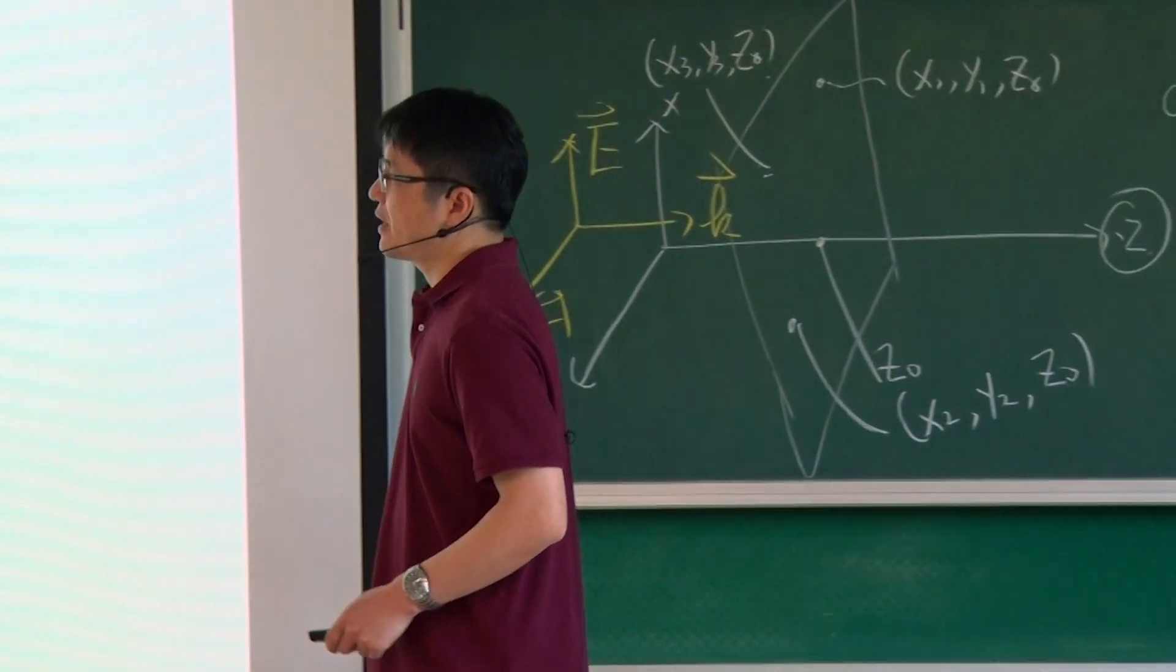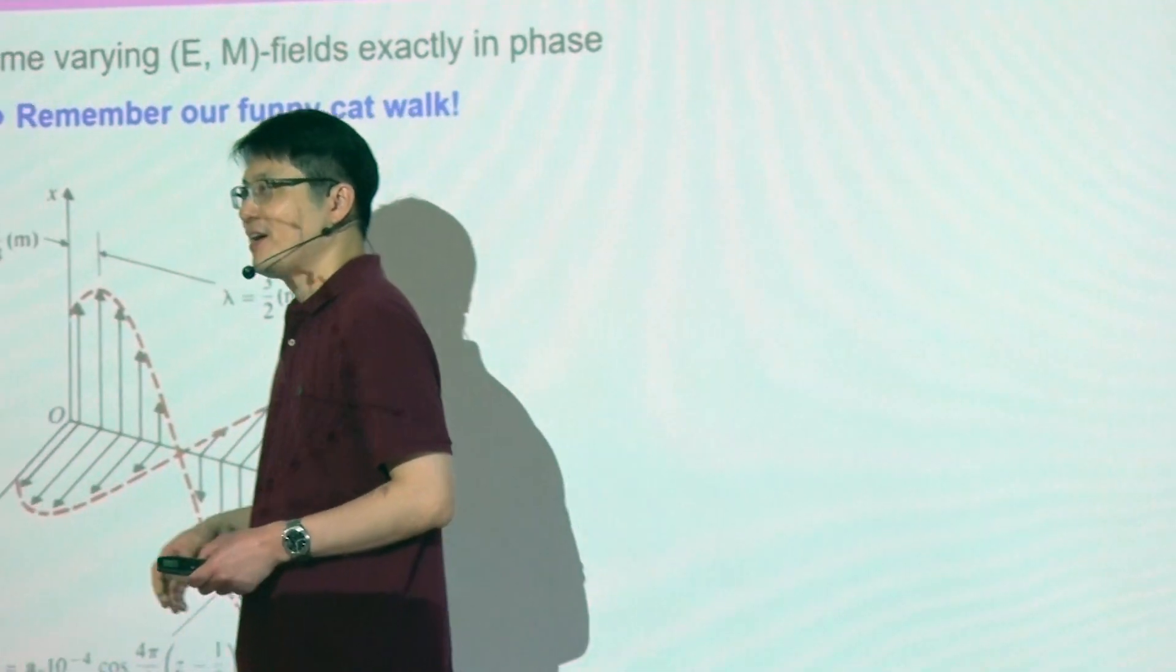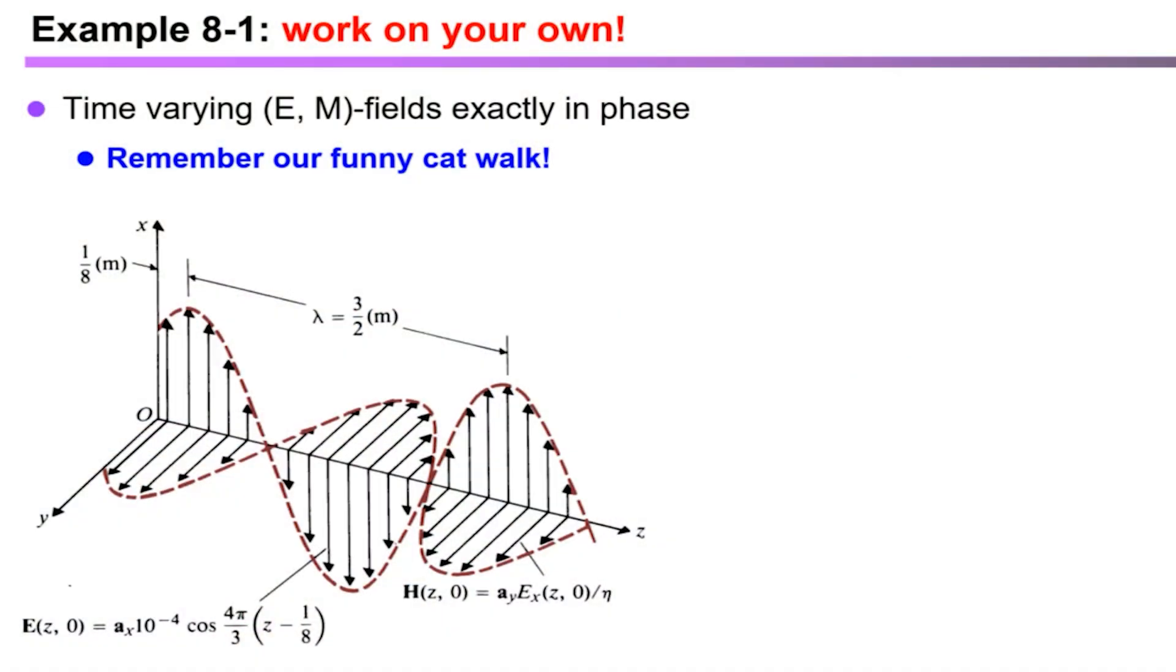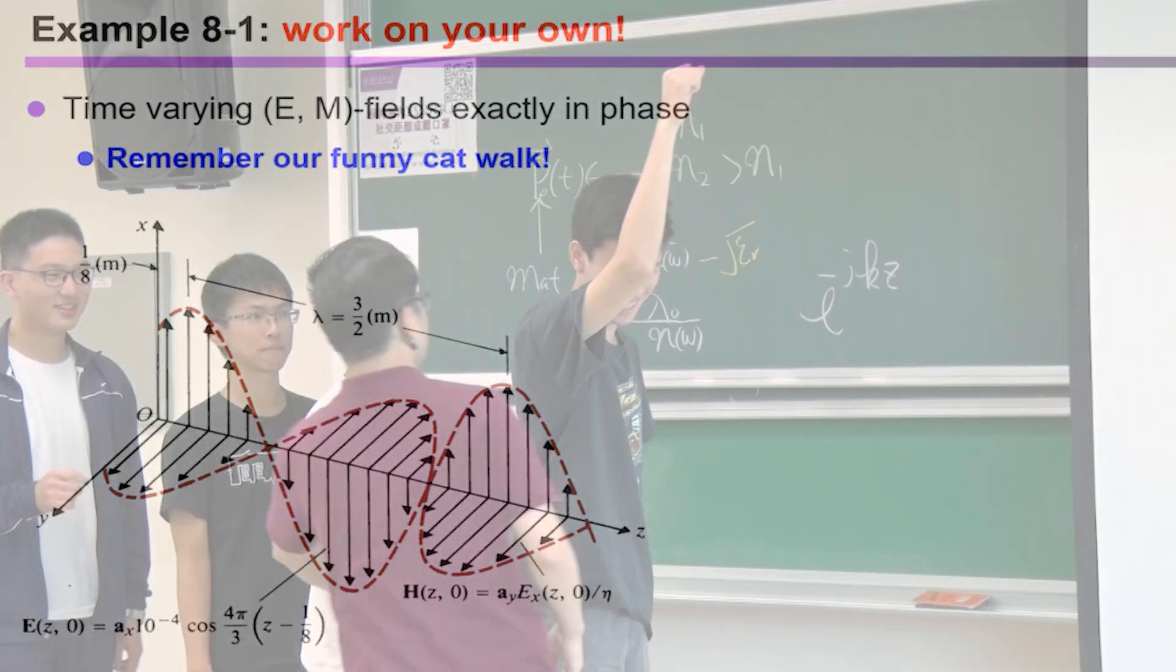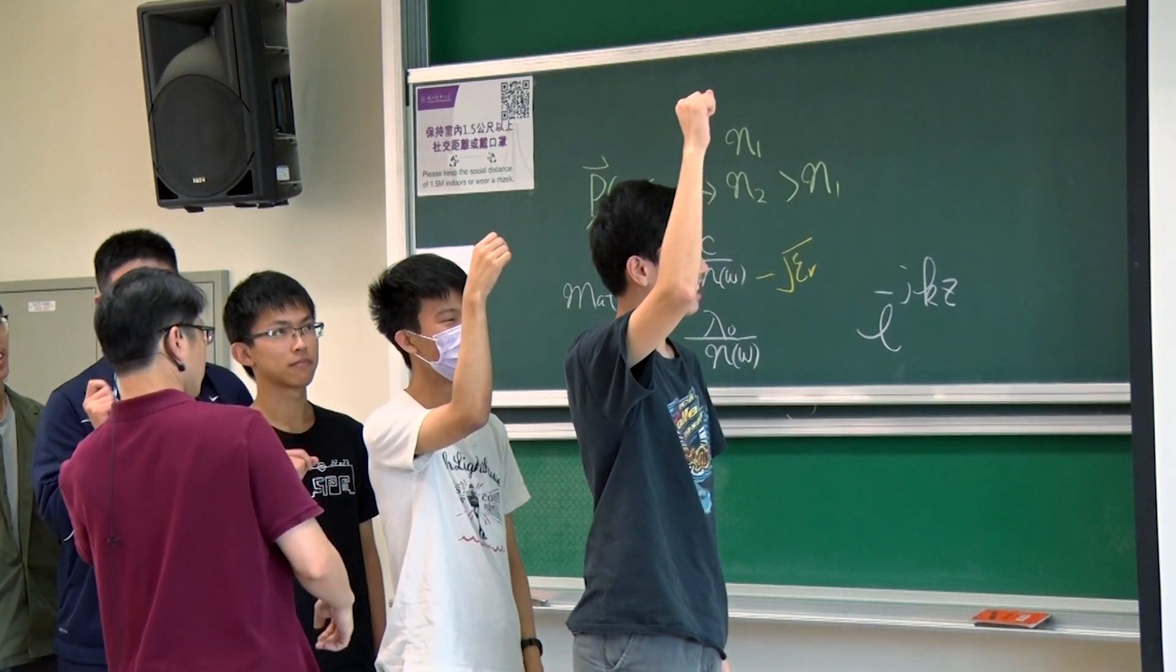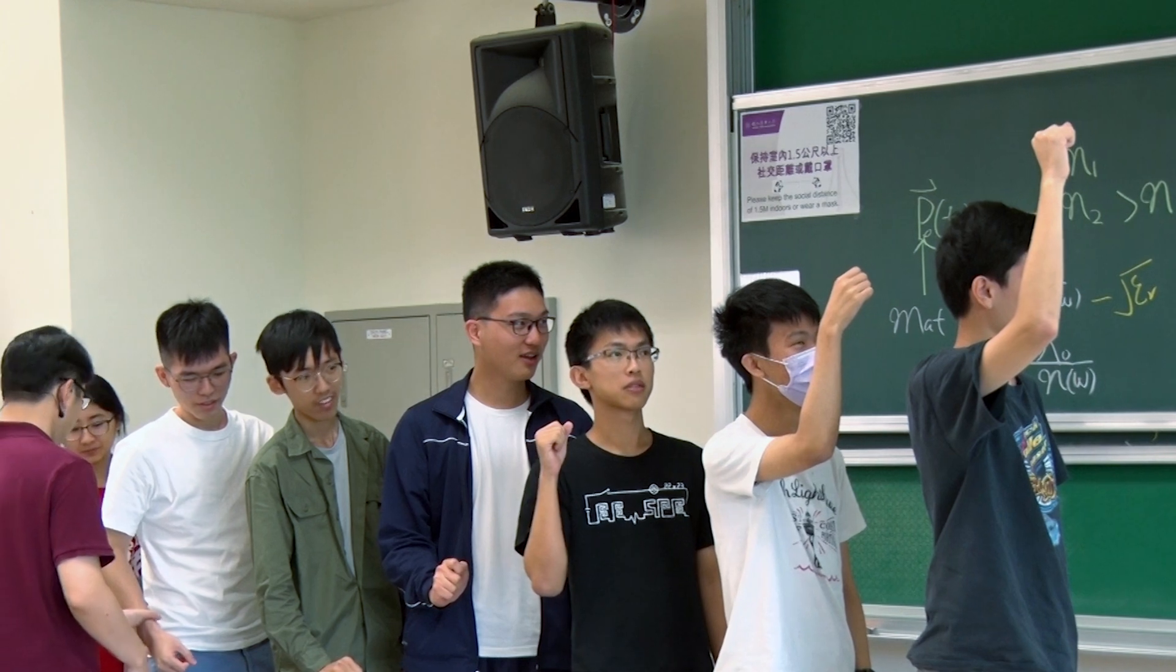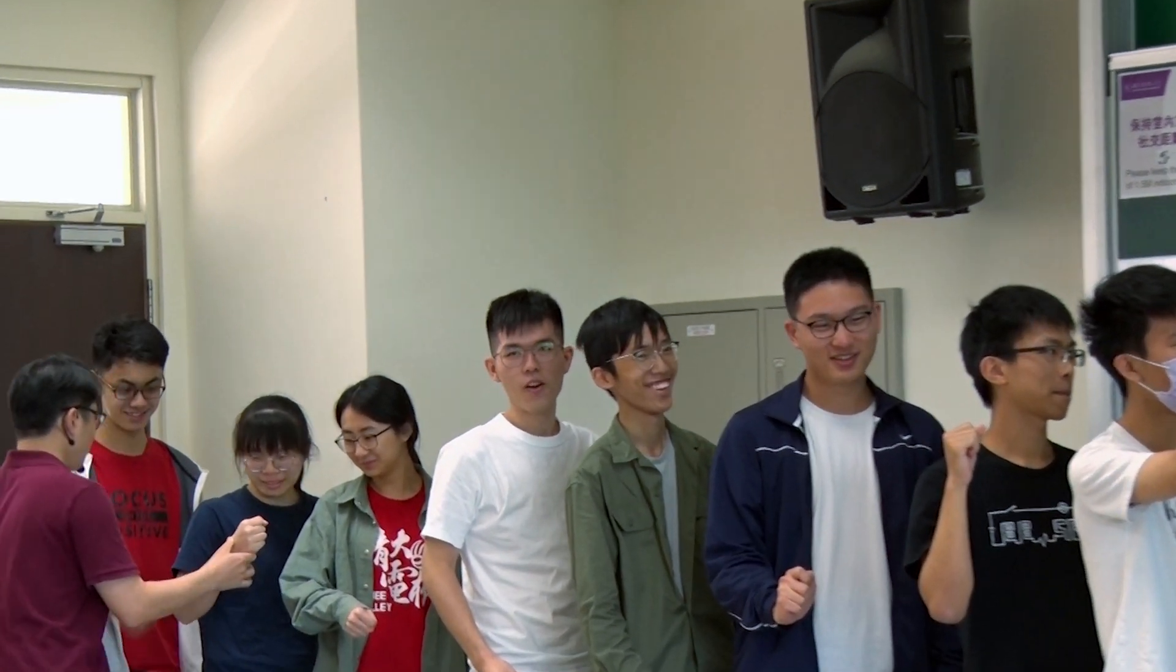So at this point, we're reaching the very last moment. I would like to have nine students. Nine volunteers. Just come to the stage. Please. One, two, three, four, five, six, seven, eight, nine. Okay, starting from here, facing towards this direction.